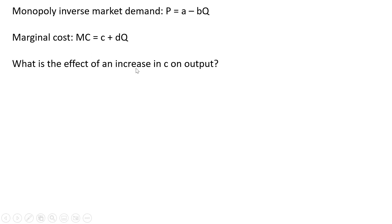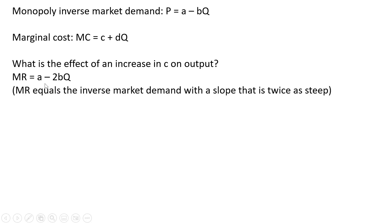What is the effect of an increase in C on the monopoly's output? We're going to get marginal revenue. Using a shortcut method, marginal revenue just equals the inverse market demand with a slope that is twice as steep. So take the inverse market demand and place a 2 in front of the B, and you have marginal revenue.